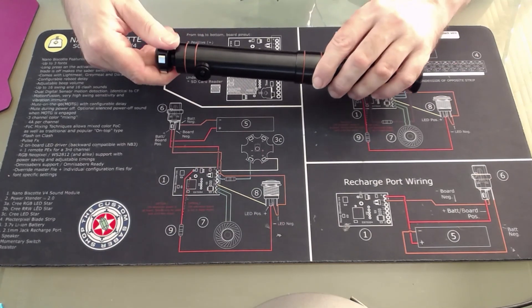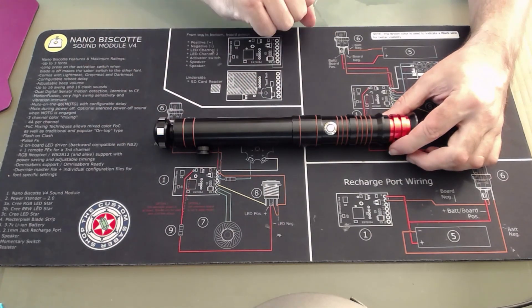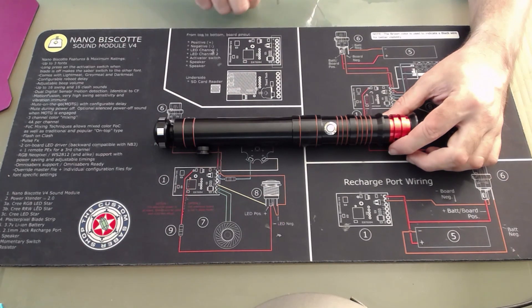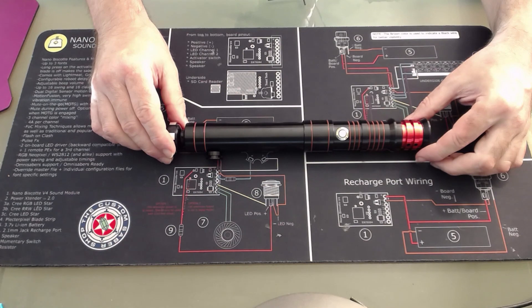But in the meantime, it's very simple to charge your saber. Just remove your body, then you have access to the USB-C port, plug in your cable, wait a few hours for the lights to go out, and you're all ready to go for another couple of hours.